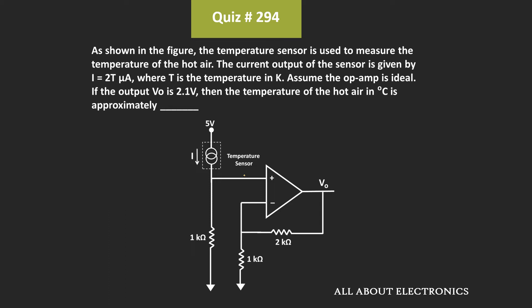And here, we have been given the relationship between the temperature as well as the current which is flowing through this temperature sensor. So using this temperature sensor, the temperature of the hot air is measured. So here, for the given output voltage of the op-amp, we have been asked to find the temperature of the hot air.